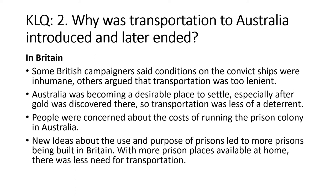In Britain, things were changing too. Some campaigners said conditions on the convict ships were inhumane. Others argued transportation was too lenient — an easy option compared to a British prison or the death penalty. Australia was becoming a desirable place to settle, especially after gold was discovered there, so transportation seemed less of a deterrent. People were concerned about the costs of running the prison colony, and new ideas about prisons led to more being built in Britain. With more prison places available at home, there was less need for transportation.